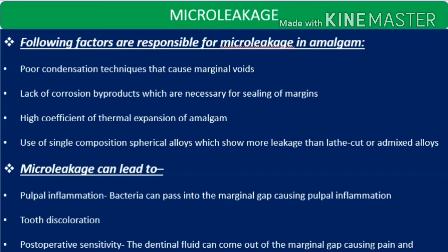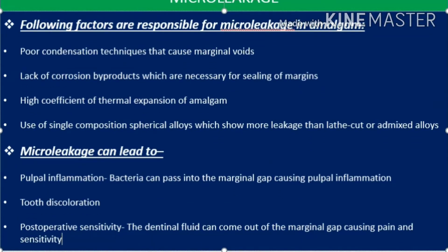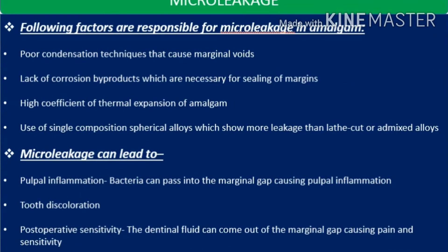Factors responsible for micro leakage in amalgam include: poor condensation techniques which lead to voids and marginal voids; lack of corrosion by-products necessary for sealing of margins; high coefficient of thermal expansion of amalgam; and use of single composition spherical alloys, which show more leakage than lathe-cut or admixed alloys.